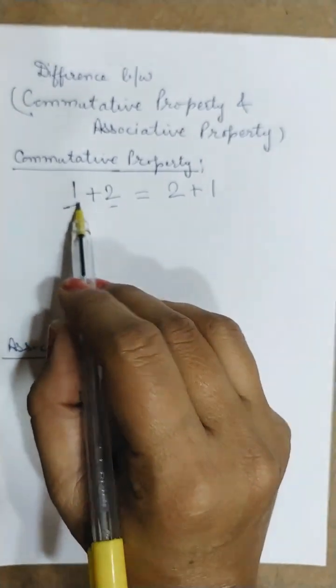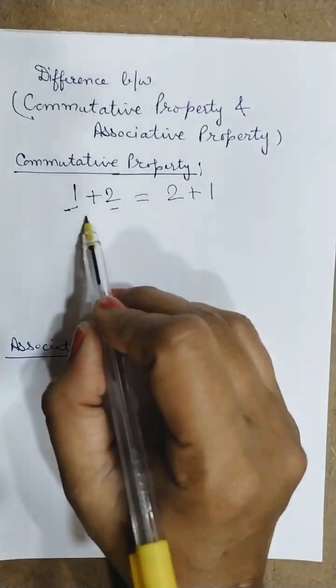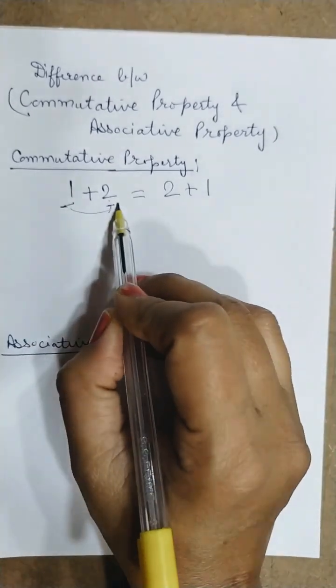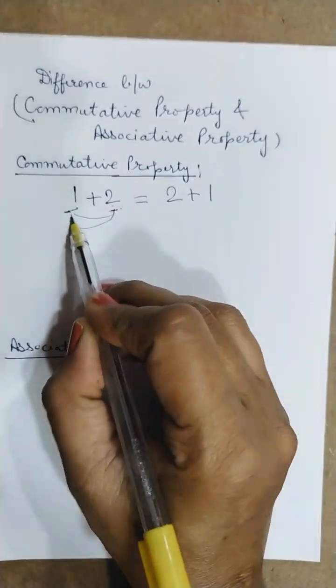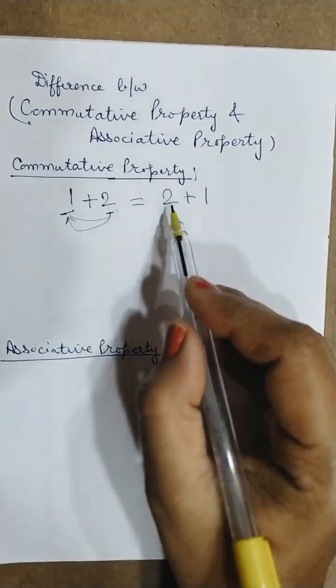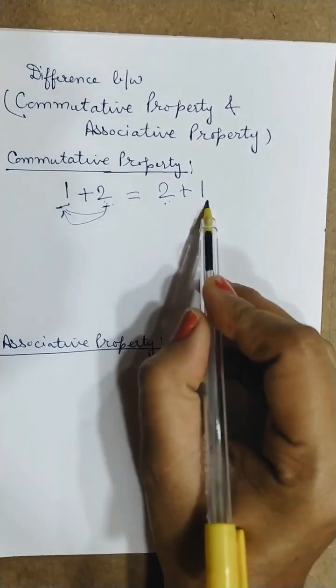Like 1 comes first and 2 comes at the second place. Now when I change their order, 1 comes at the second place and 2 comes at the first place. In simple language, you can say their orders are changed. See, here 2 is at the first place and 1 is at the second place.